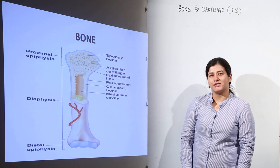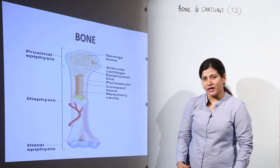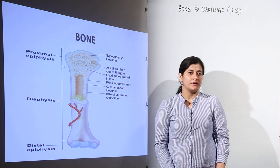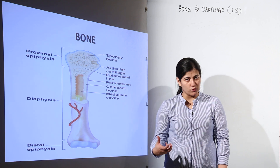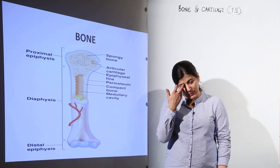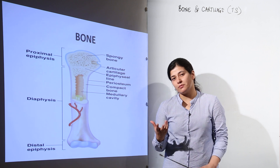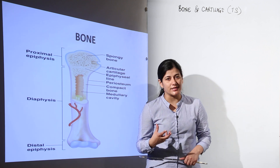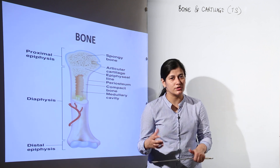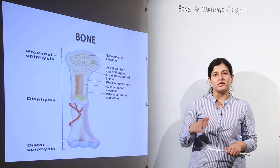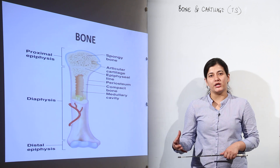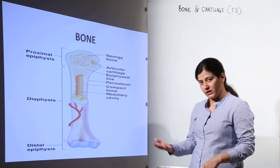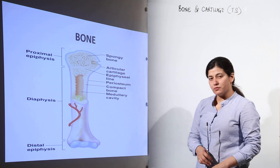After dealing with dense connective tissue, bone and cartilage, we are now going to understand what a bone and cartilage are all about by understanding their transverse sections. Our next topic is the transverse section of a bone, and diagrammatically we are going to see what a bone looks like when we cut and observe it.